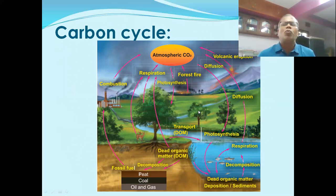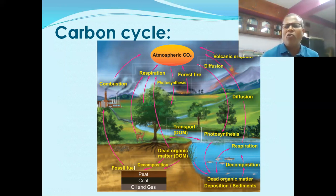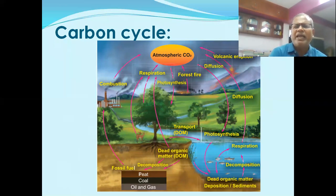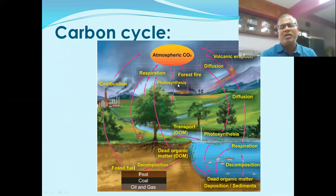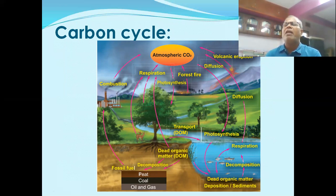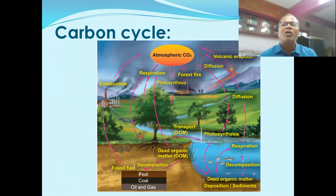Photosynthesis involves two stages: the light reaction and the dark reaction. The light reaction involves splitting of water — photolysis of water. The dark reaction involves reduction of carbon dioxide into carbohydrates with the help of the reducing power NADPH₂ and light-generated energy ATP. So carbon dioxide is converted into carbohydrates.